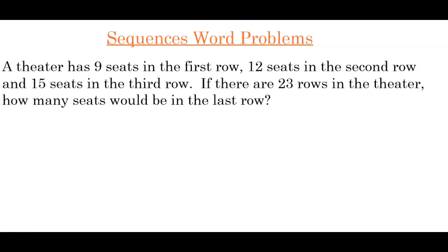Our first example: a theater has 9 seats in the first row, 12 seats in the second row, and 15 seats in the third row. If there are 23 rows in the theater, how many seats would be in the last row? First thing with any word problem is to define the variable, so in this case we're going to let n, because we're dealing with sequences, be equal to the number of rows.